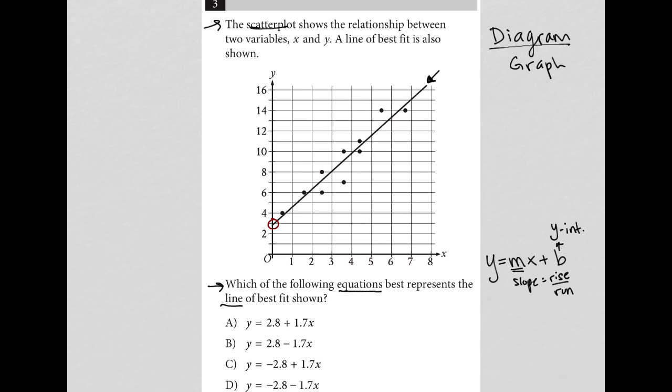So looking at the answer choices, it looks like I have a positive 2.8, a positive 2.8, a negative 2.8, a negative 2.8. So c and d are gone for me because obviously my y-intercept is not negative. It's positive and 2.8 makes a lot of sense. So just based upon b value, I'm sorry, my b value, meaning my y-intercept, I know that that's between choice a and b for my options.